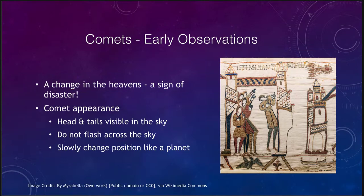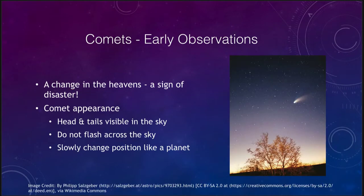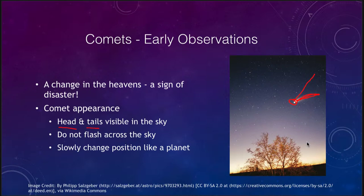What does a comet actually look like? We can see that it has parts visible in the sky which we call the head and the tails. We can see the head of the comet right at the center, and we have one tail curving off to one side and one going straight back. So there are actually two tails to a comet, and most comets do have two tails.